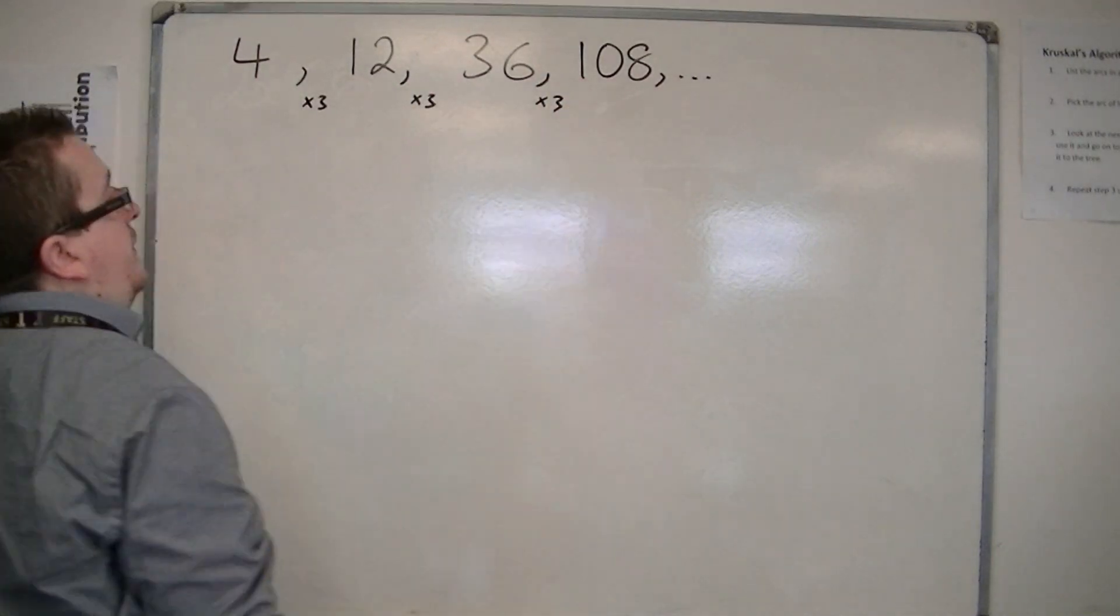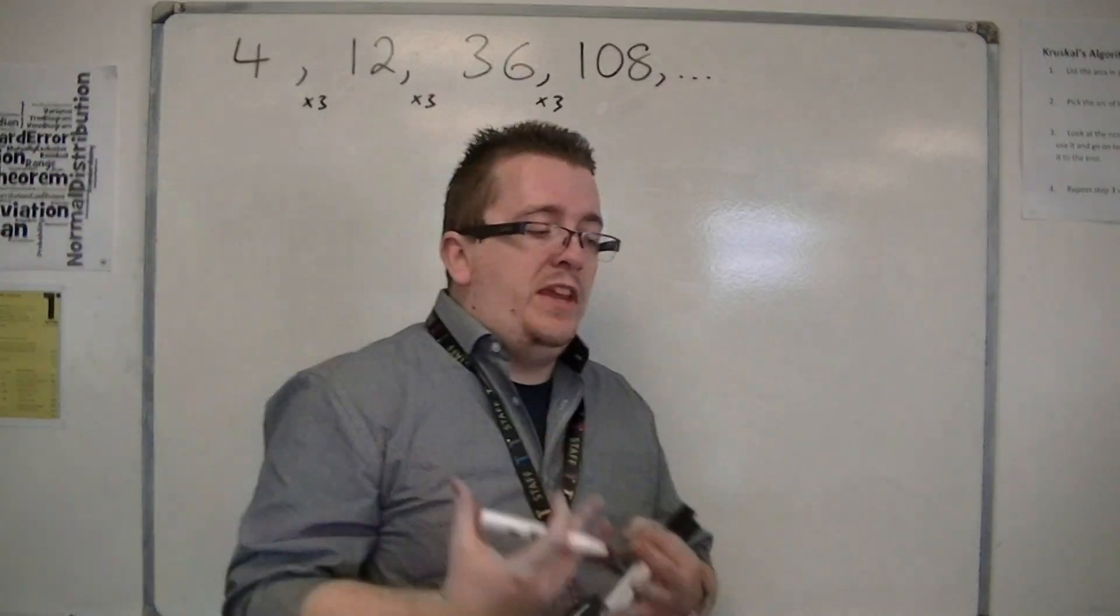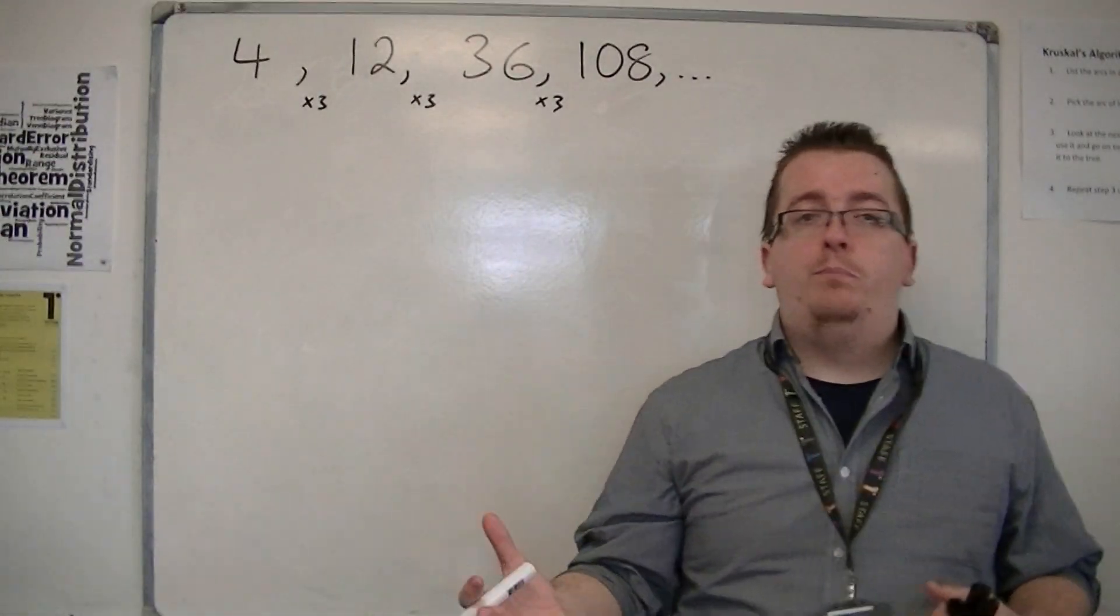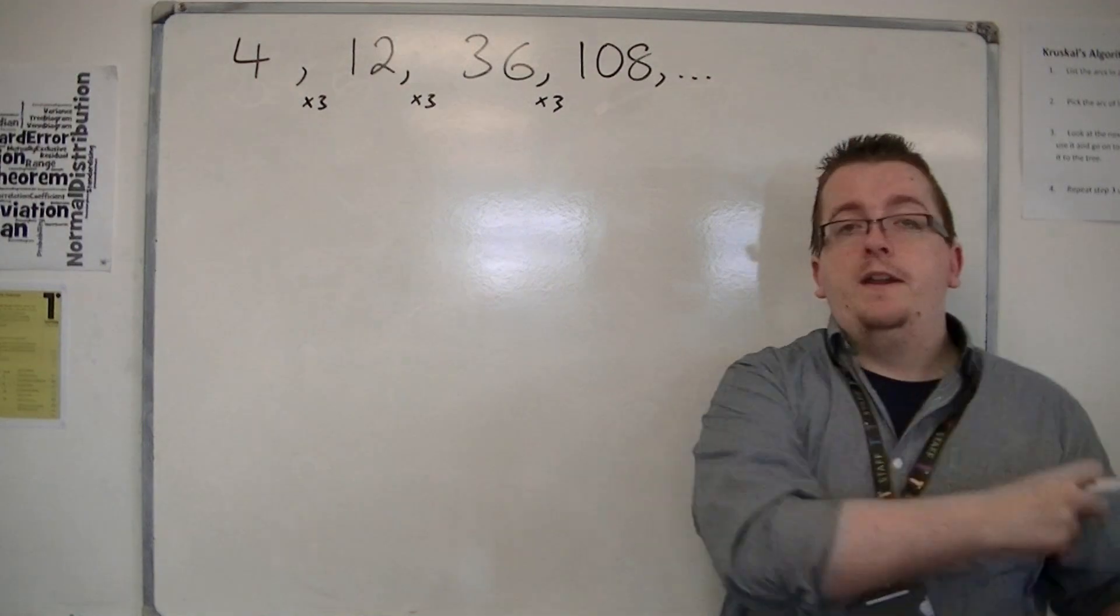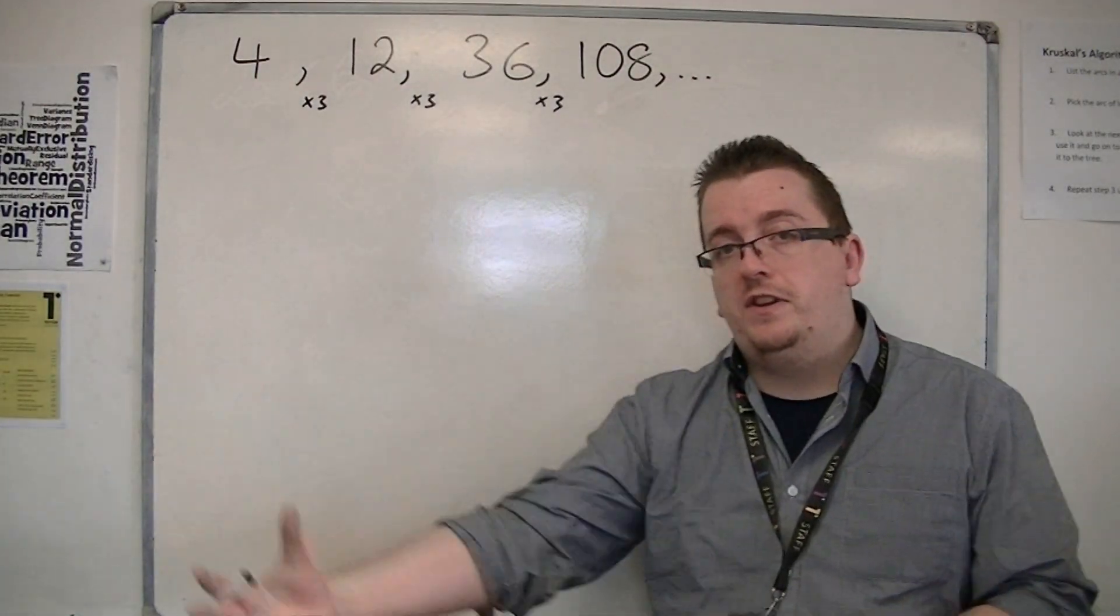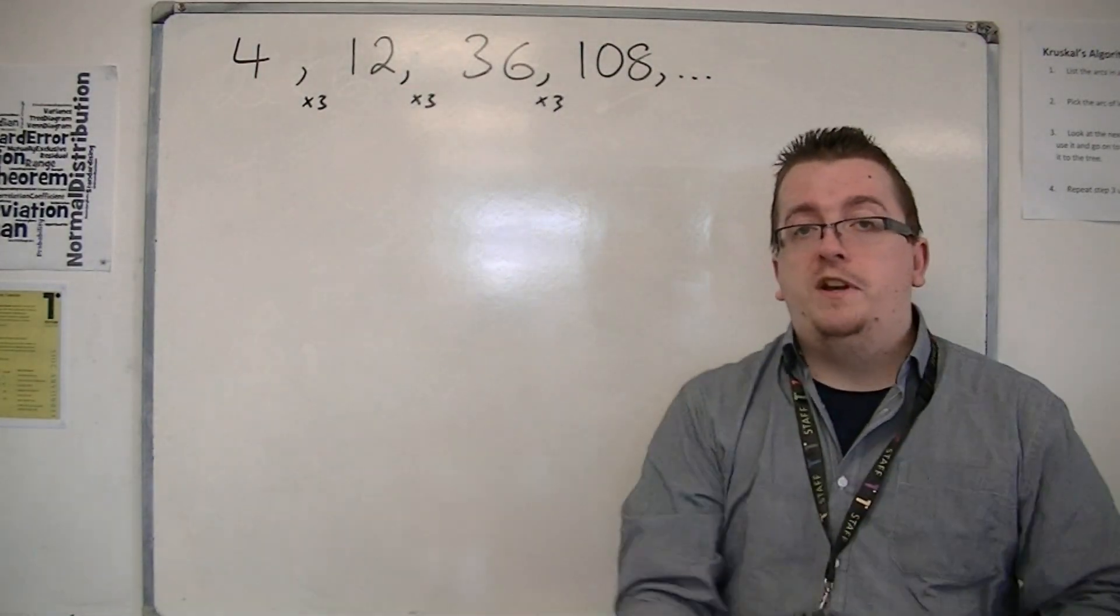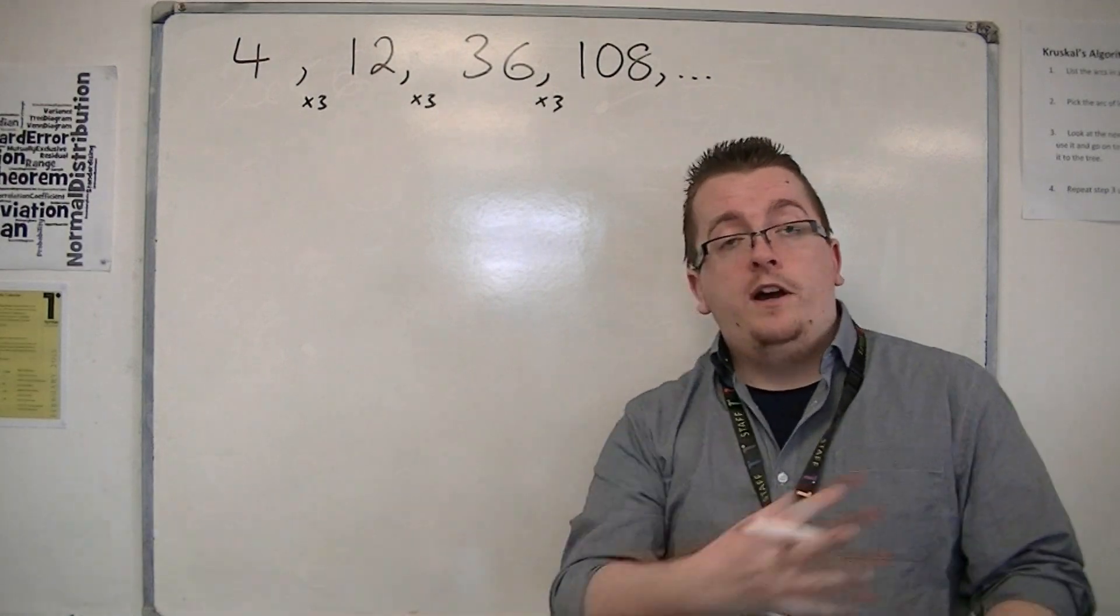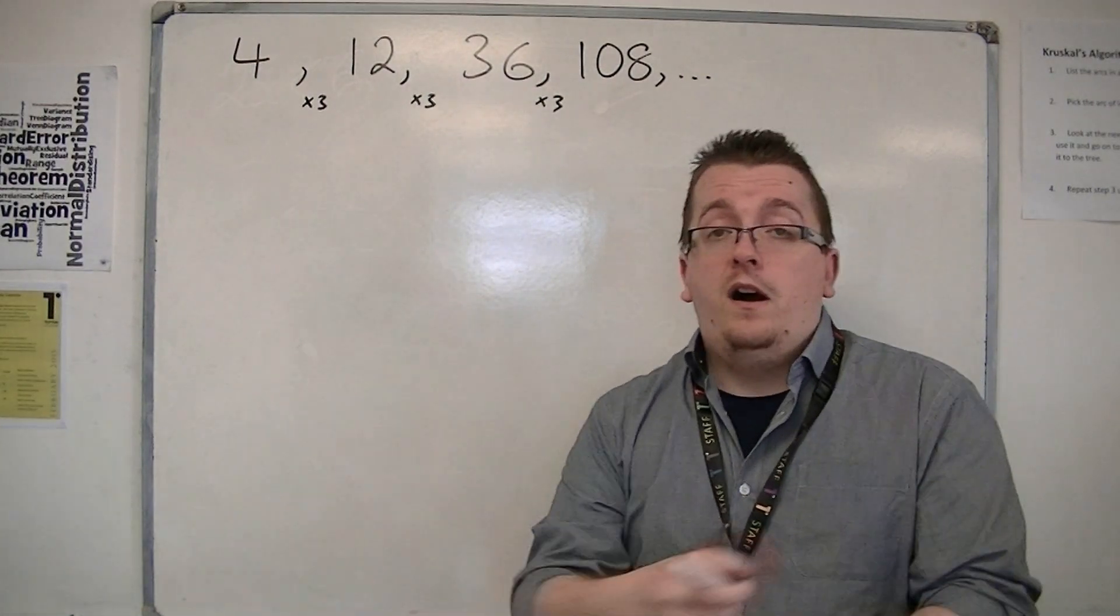So a geometric sequence can be seen as a sequence that is generated by multiplying the previous term by a number, by a constant number throughout. So multiplying through by 2, multiplying through by 100 each time, or by a half.